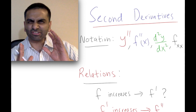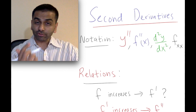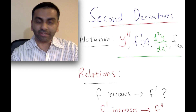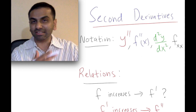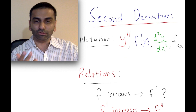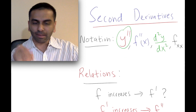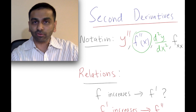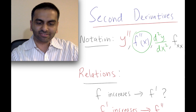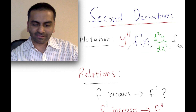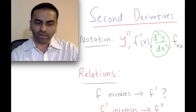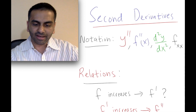First, notation. The notation for the second derivative of a function — all of these notations basically mean the same thing. Different books and professors might use different notation, but essentially it's a double prime. So y double prime means the second derivative of y, or f double prime of x. In the dy/dx notation, the second derivative is written as d²y over dx², meaning the second derivative of y with respect to x.